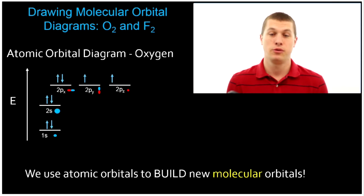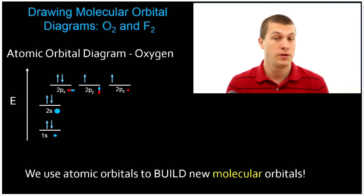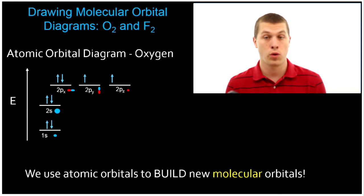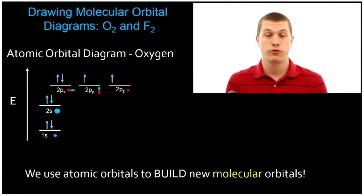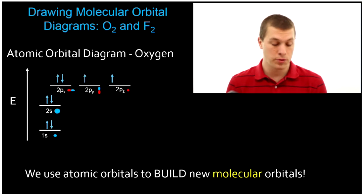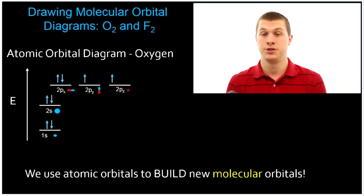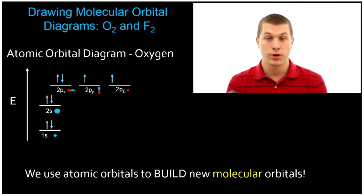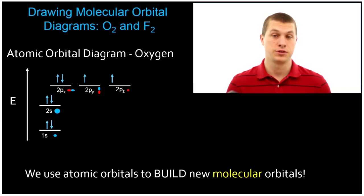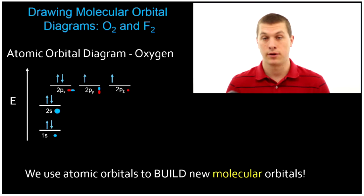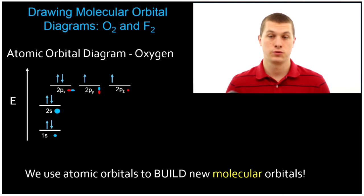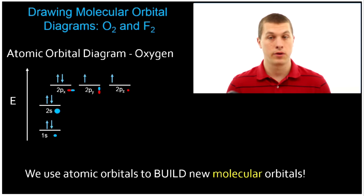Welcome to this episode of Real Chemistry where we are going to be drawing molecular orbitals for oxygen and fluorine. Recall, molecular orbitals are just thinking about how our electrons are smeared out around our molecules, much like atomic orbitals were thinking about how electrons were smeared out around our atoms.